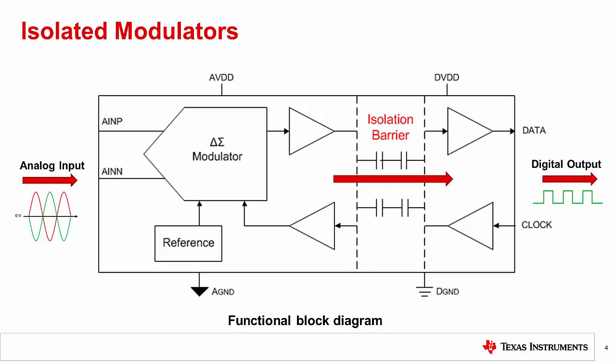When these 1s and 0s are averaged over time, the serial bit stream is proportional to the analog input voltage. Let's also take a quick look at the isolation barrier.